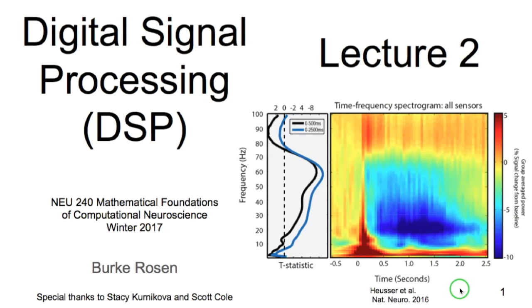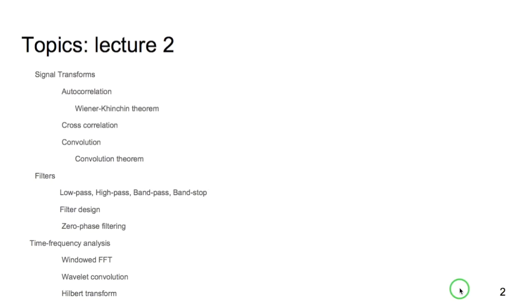And so the topics we are covering today are three important signal transforms: the autocorrelation, the cross-correlation, and convolution. I will then be covering filters and filtering. And finally I'll be going over three methods of time frequency analysis: the windowed or short time FFT, wavelet convolution, and the Hilbert transform.